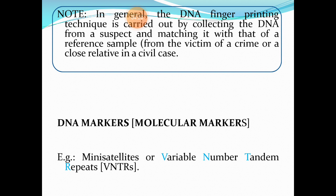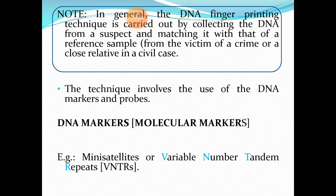It has to be noted that the DNA fingerprinting technique is normally carried out by collecting a DNA sample from a suspect and matching it with that of a reference sample — from the victim of a crime if it is a forensic case, or a close relative if it is a civil case. The profile is developed and matched with the reference sample.